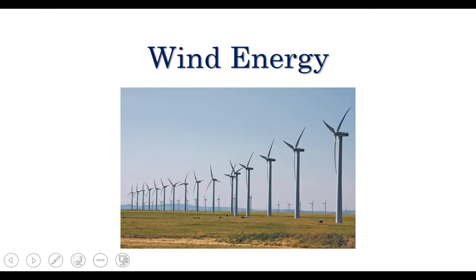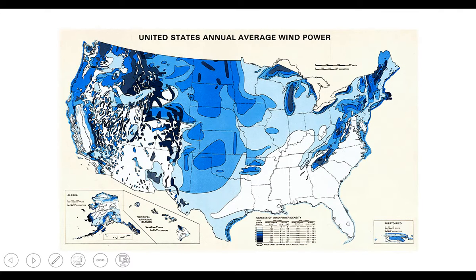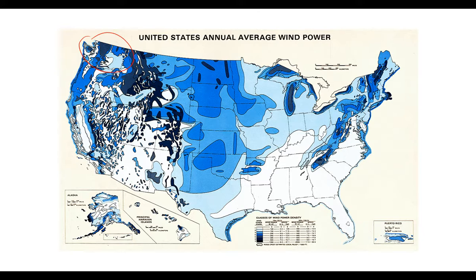The last renewable source is wind. Wind turbines are basically big fans running in reverse — instead of using electricity to move air, they use moving air to create electricity. You have to be in a windy location. This map shows wind speeds across the US: dark blue areas are very windy, white areas are less windy. Looking at Washington, there are quite a few fairly windy areas but also many calm ones. Florida, for example, would not be a great place for wind turbines.